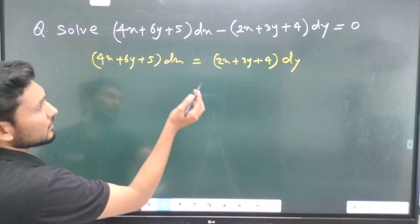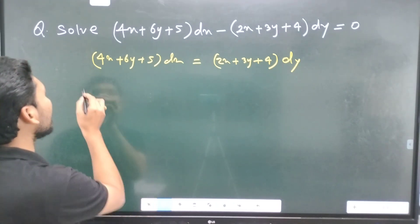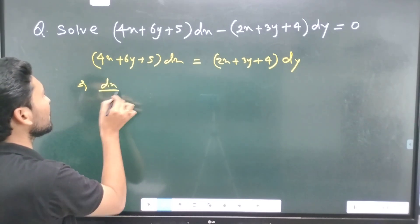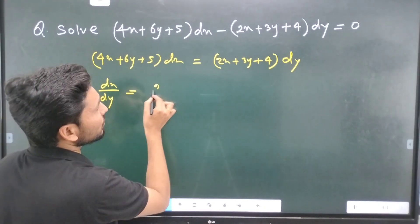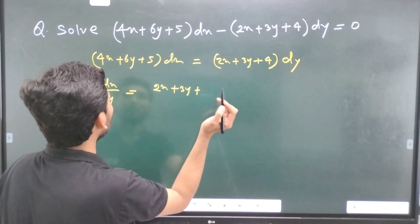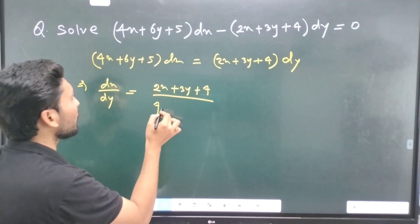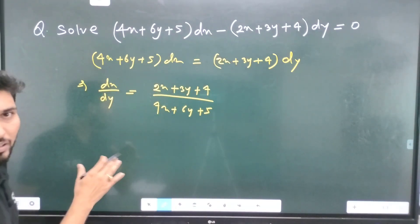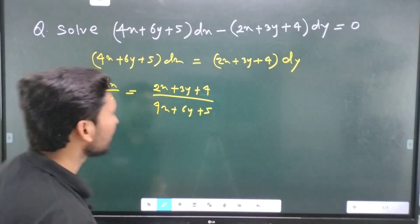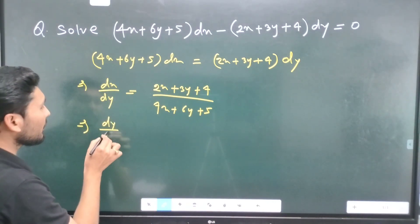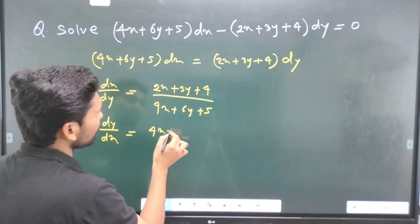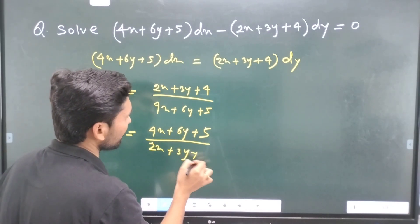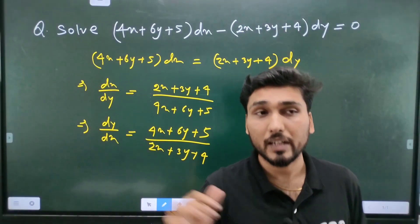So I have to write here: dy by dx is equal to 4x plus 6y plus 5, divided by 2x plus 3y plus 4. You can check: dx by dy is also considered. So now, dy/dx equals (4x + 6y + 5) divided by (2x + 3y + 4).